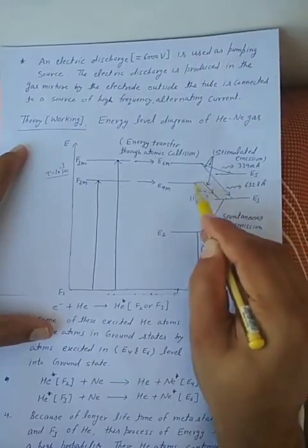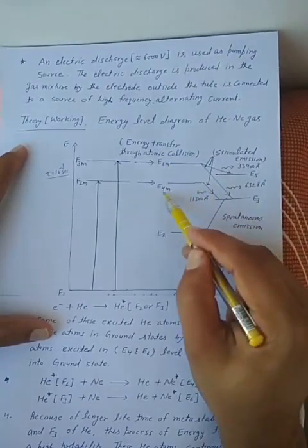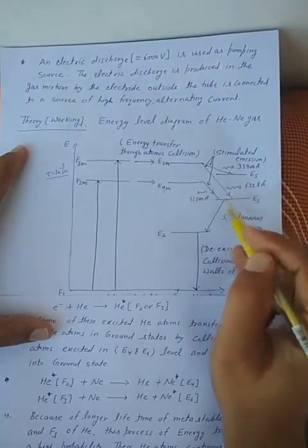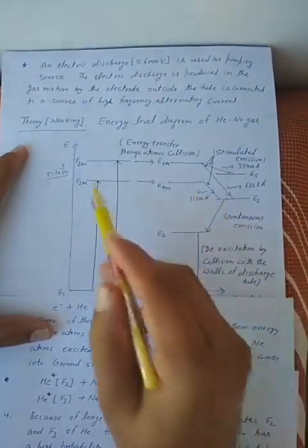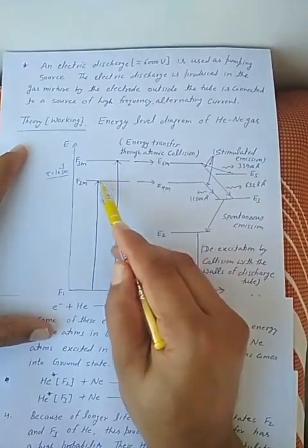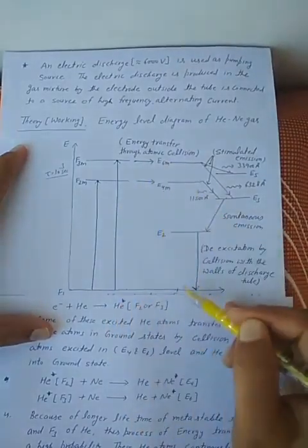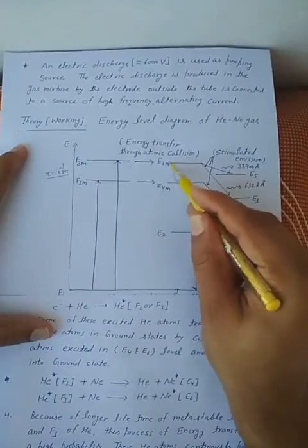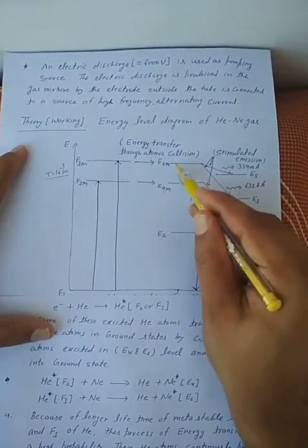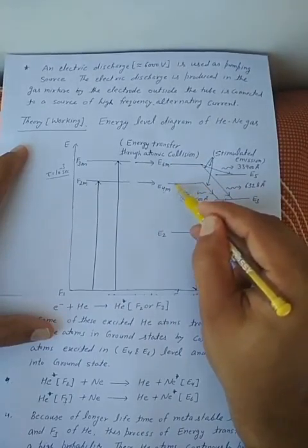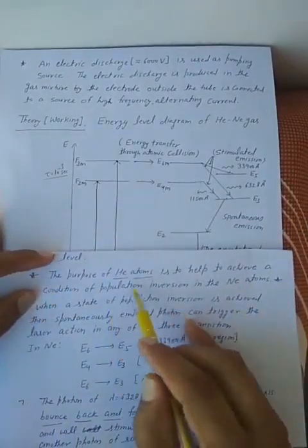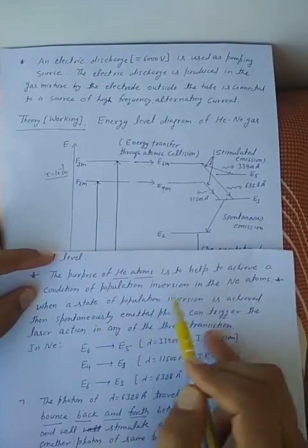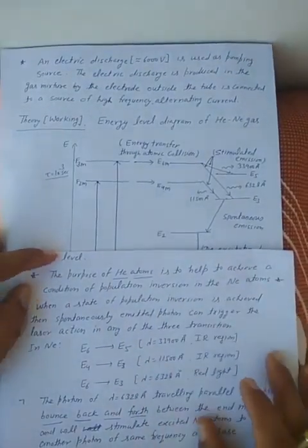Because of this continuous energy transfer process, the number of atoms in E6 and E4 levels becomes much greater than the number of atoms in E5, E3, and the ground state. We thereby achieve the condition of population inversion. The role of Helium atoms is to help achieve the condition of population inversion in the Neon atoms — Helium creates population inversion in Neon, which is the required condition for laser action.